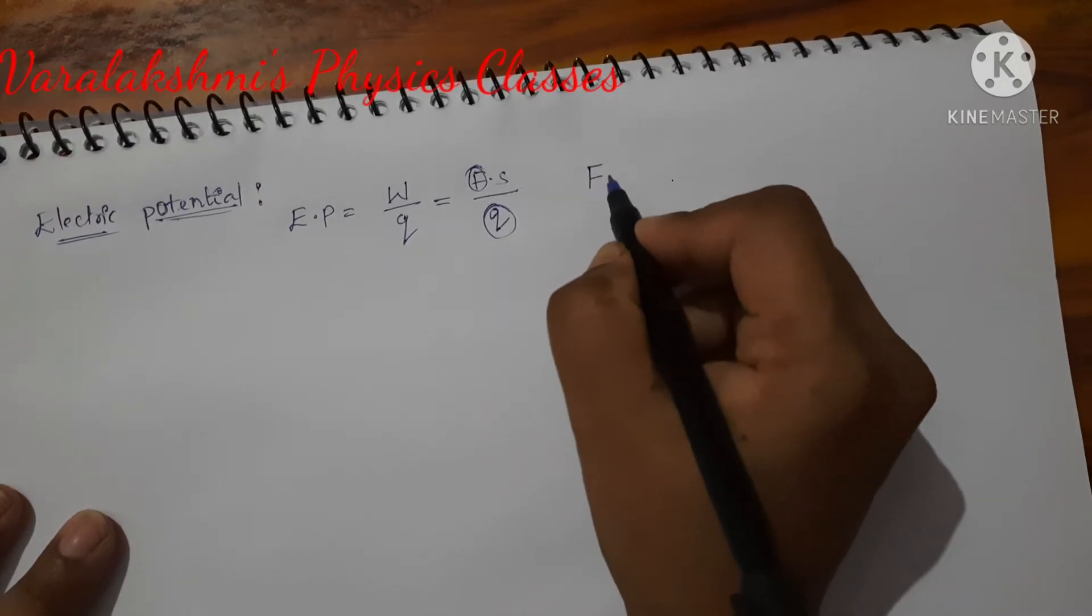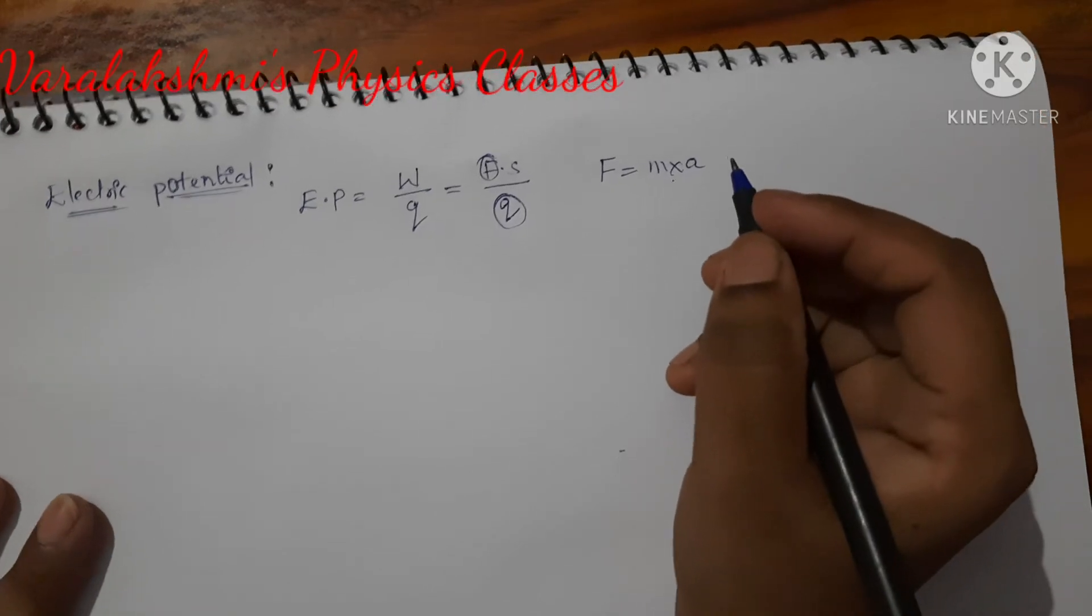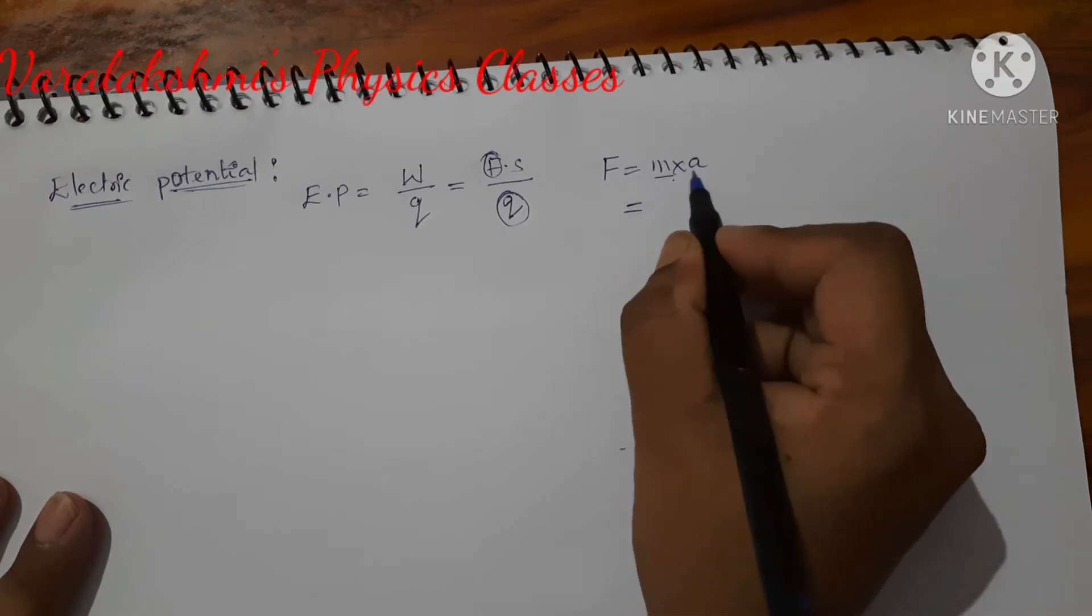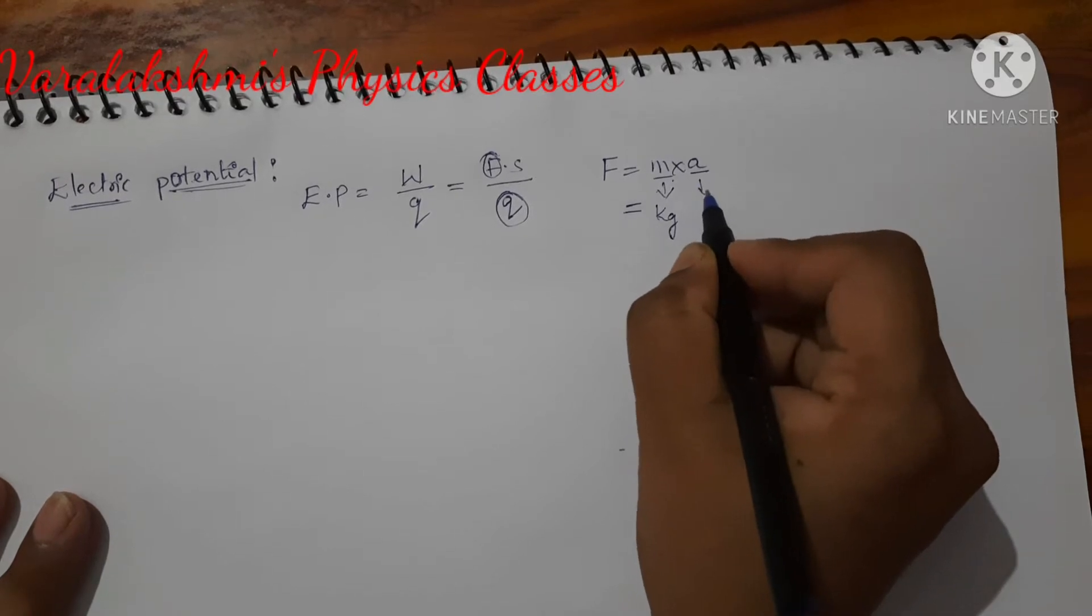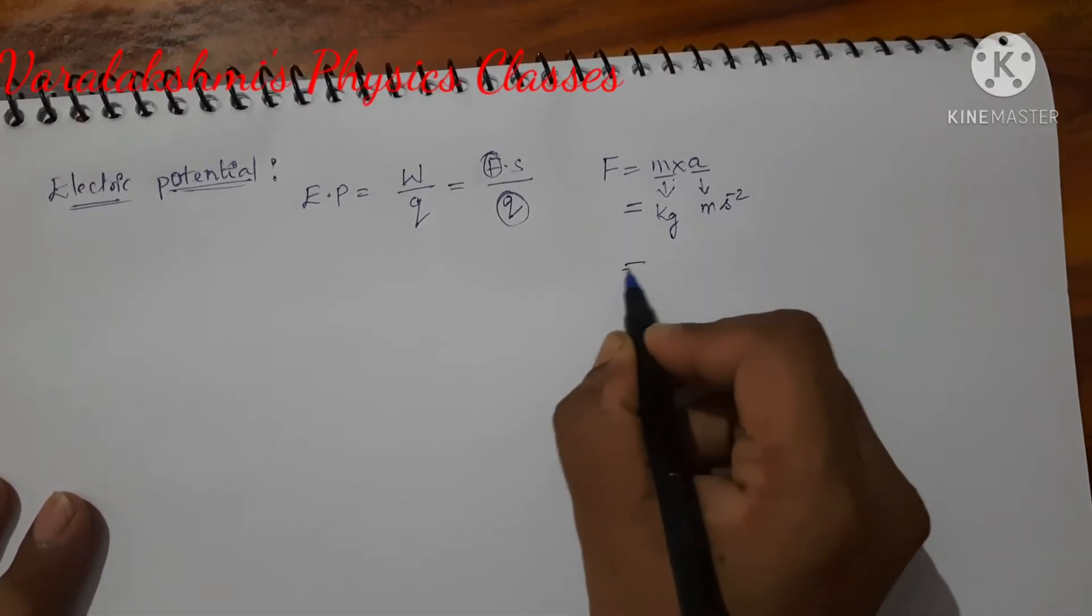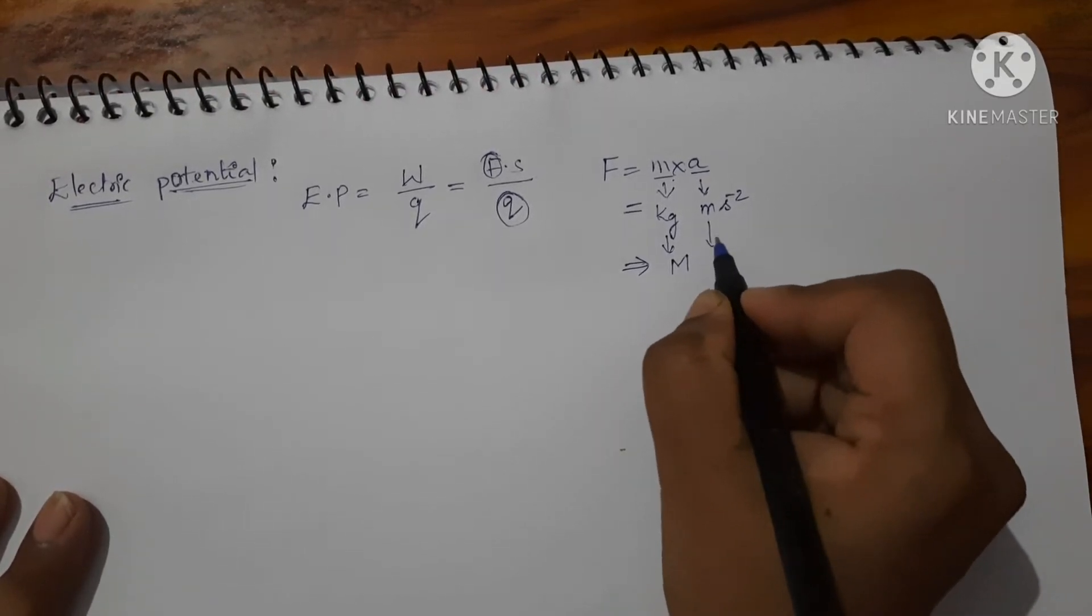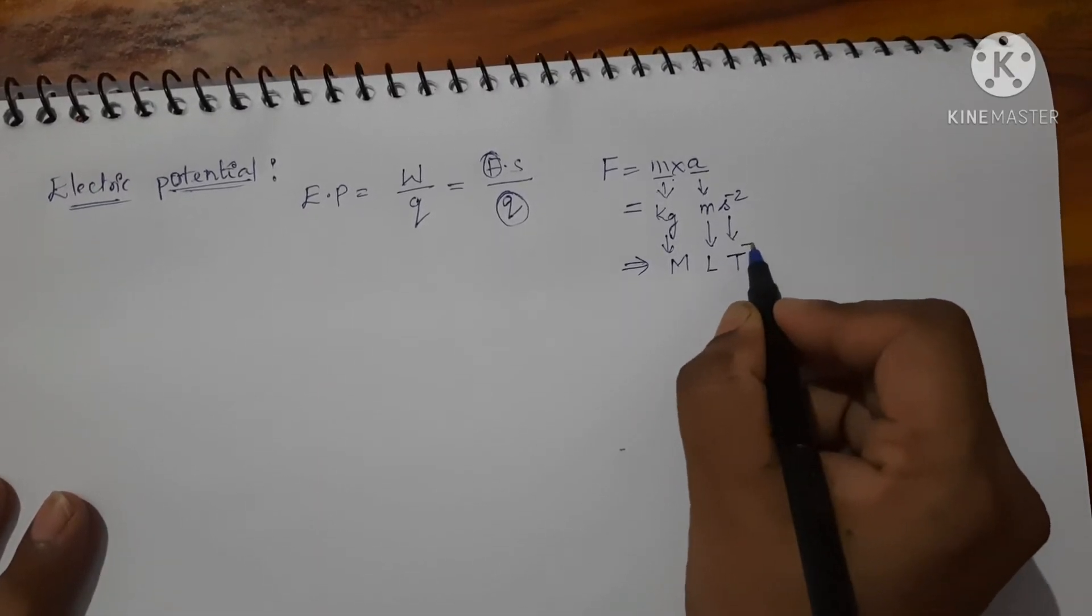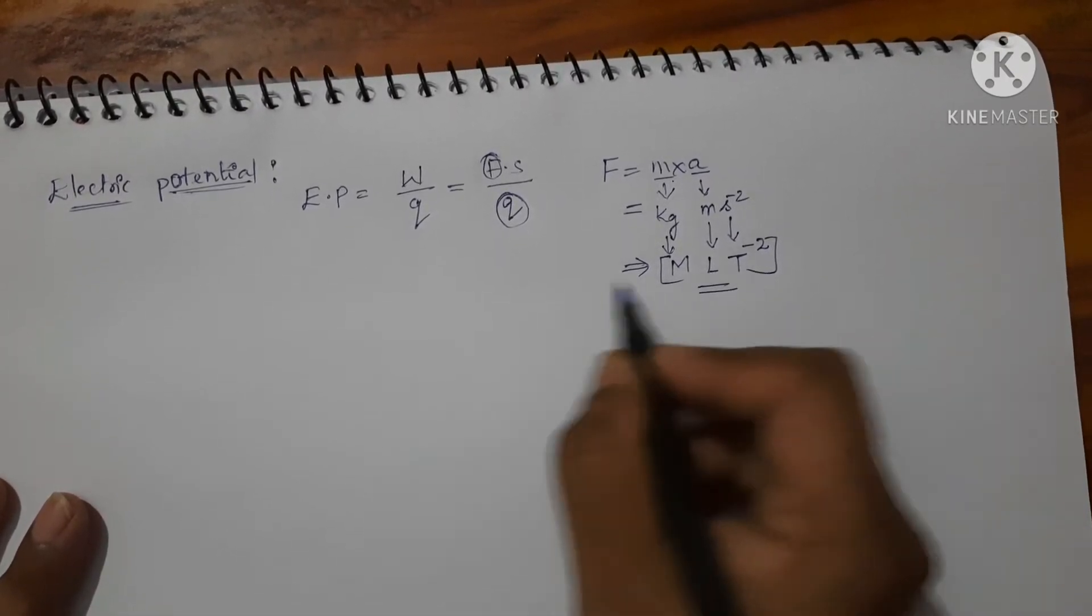Let us see here for force. Force is equal to mass into acceleration. Now write the SI unit for each of these terms: for mass, kg, and for acceleration, meter per second square. Now write the dimensions: kg is measured in terms of capital M, meter is measured in terms of L, and second is measured in terms of T, so T power minus 2. This is the dimensional formula for force.